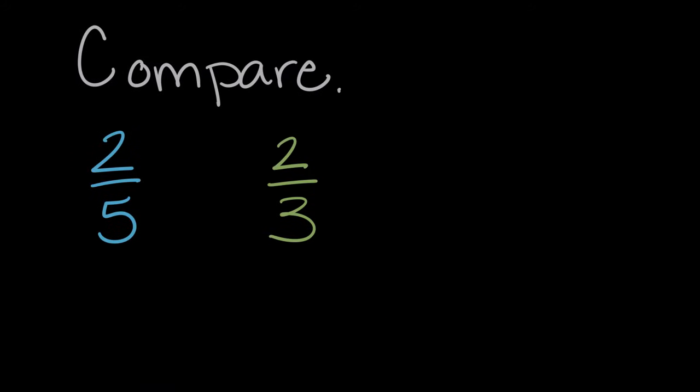Here's one more, but this time let's try to compare them without drawing. Let's just think about what these mean. Two fifths means two pieces out of five. So one whole was split five ways, and we got two of the pieces. Two thirds means that same whole was split three ways, and we got two of the pieces.